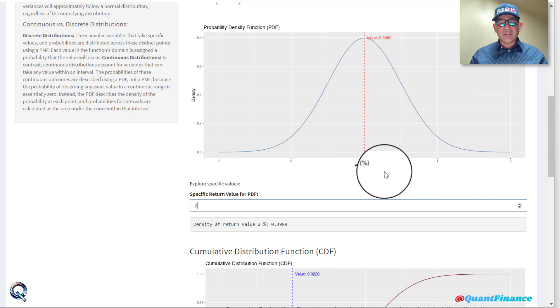This is PDF. PDF gives us value of probability at a particular return, which is on the x-axis, the horizontal axis.